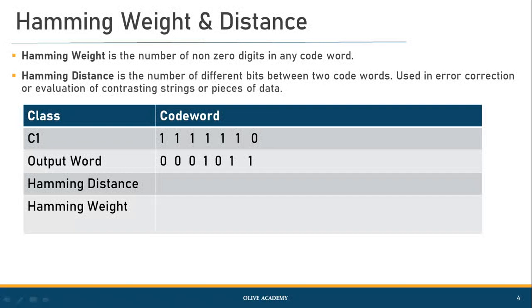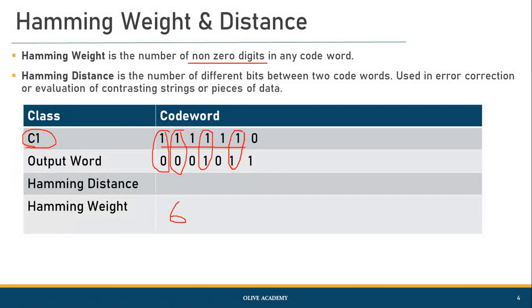Let us look at a sample example. Considering this particular case, we see the hamming weight is the number of non-zero digits. In this example there are six non-zero values, so the hamming weight is six. For hamming distance, we compare two pairs of data and whichever has a different number of values is considered to be different.